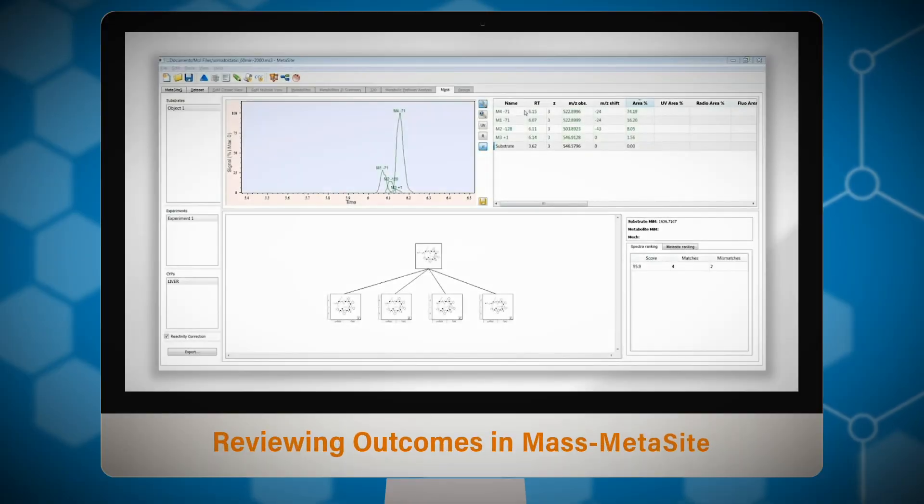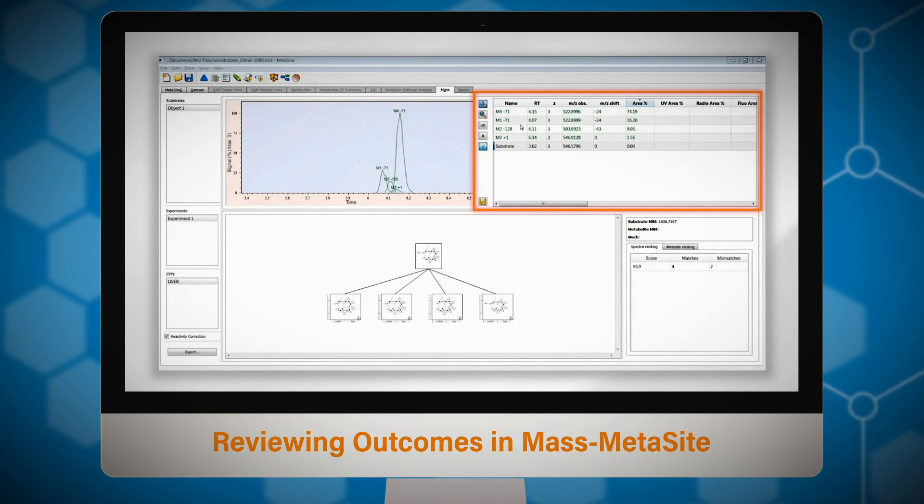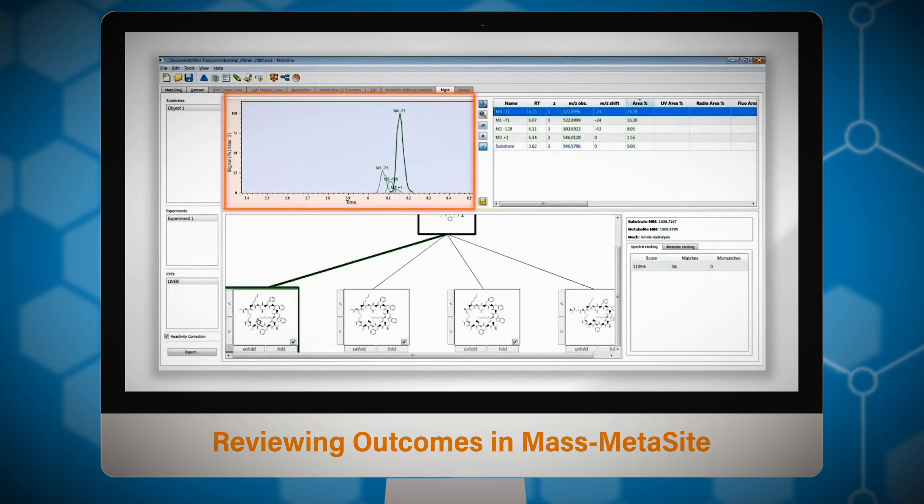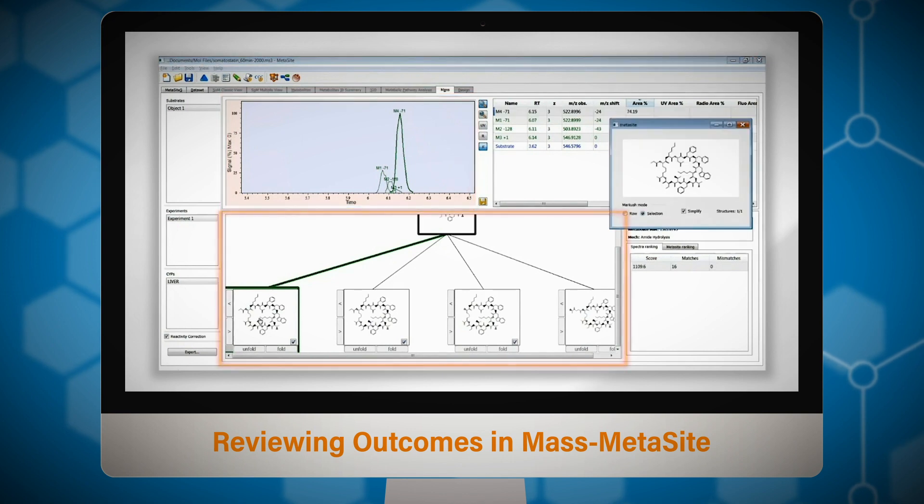Once data processing is complete outcomes can be reviewed. At top right we have the component table containing the observed mass-to-charge ratios, retention times and collision cross sections for each potential metabolite. We also have an annotated chromatogram and a metabolite scheme in which the most likely explanation for each observed component is presented.